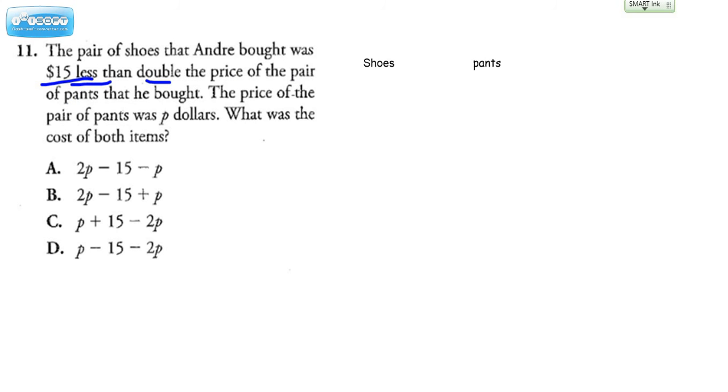Now, first of all, let's just think about what would we do if we knew the price of both and we needed the total cost, right? What's the cost of both items? Wouldn't we be adding these two things? We would take whatever the shoes is, we'd take the pants, and we'd add it together, and then that would be the total. Well, we don't really have an actual number. We have to come up with an algebraic expression to plug into both of these things.